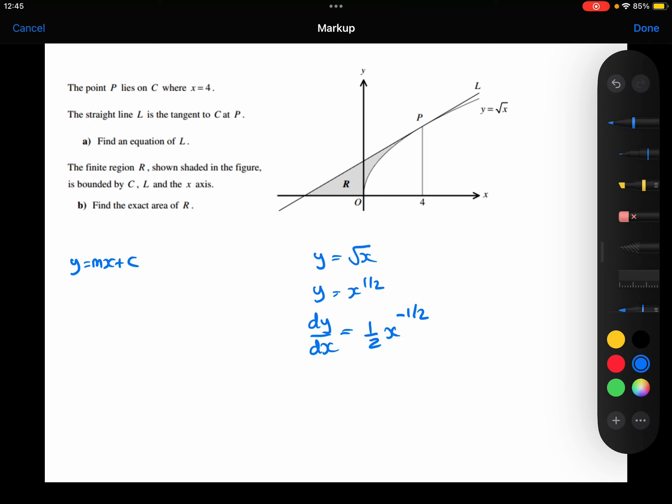And I'm going to use that to work out the gradient of the curve when x is 4. So if I substitute that in, dy/dx is a half times 4 to the power of minus one half. The 4 to the power of a half is the square root of 4, which is 2.